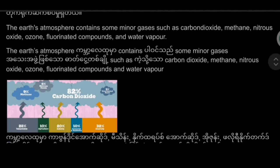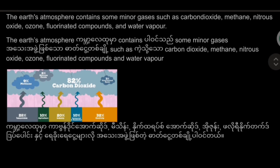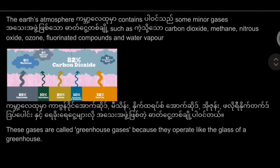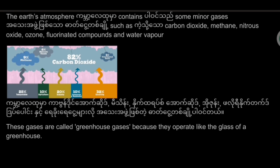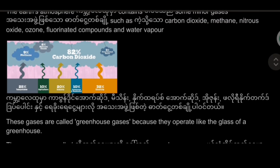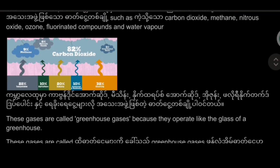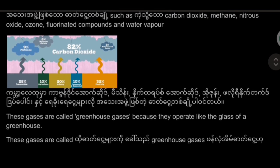The earth's atmosphere contains some minor gases such as carbon dioxide, methane, nitrous oxide, ozone, fluorinated compounds, and water vapor.